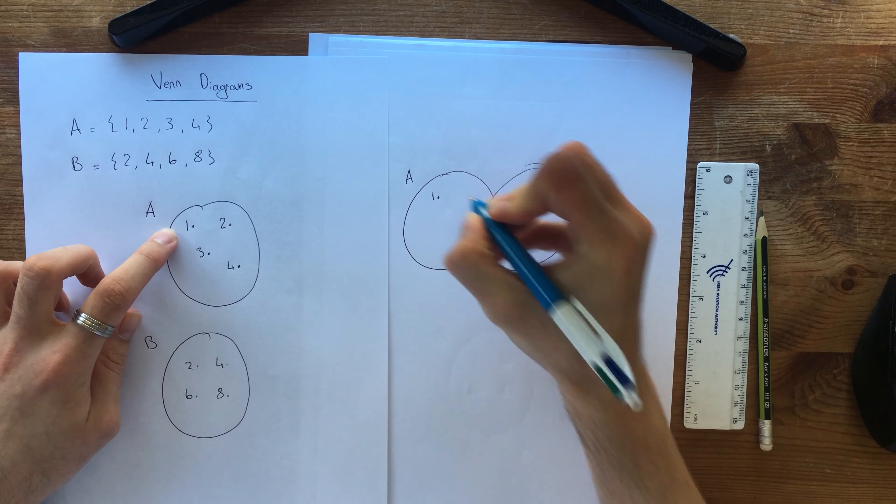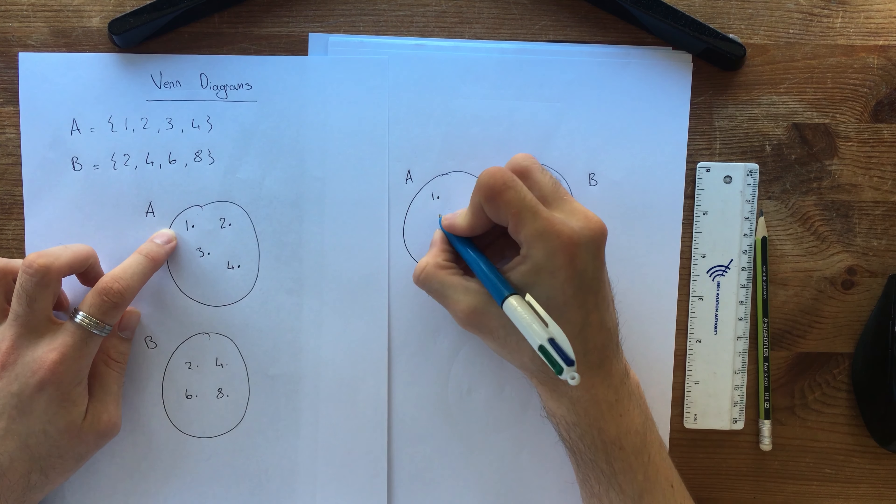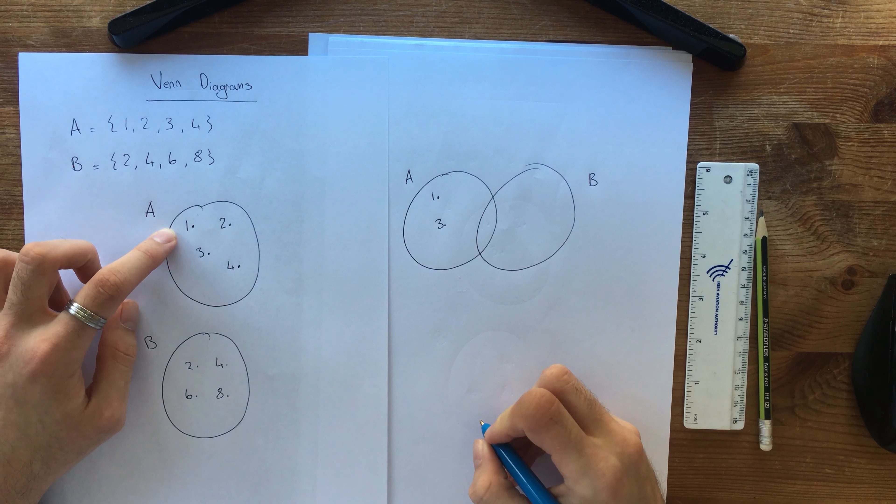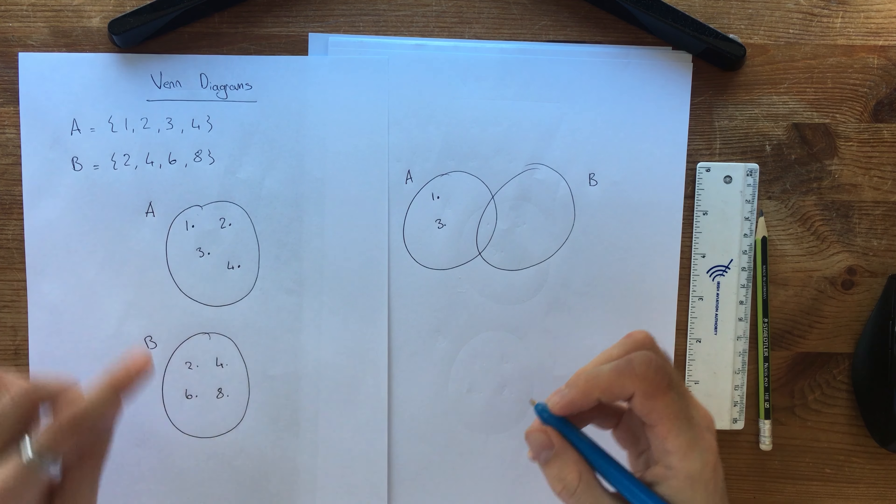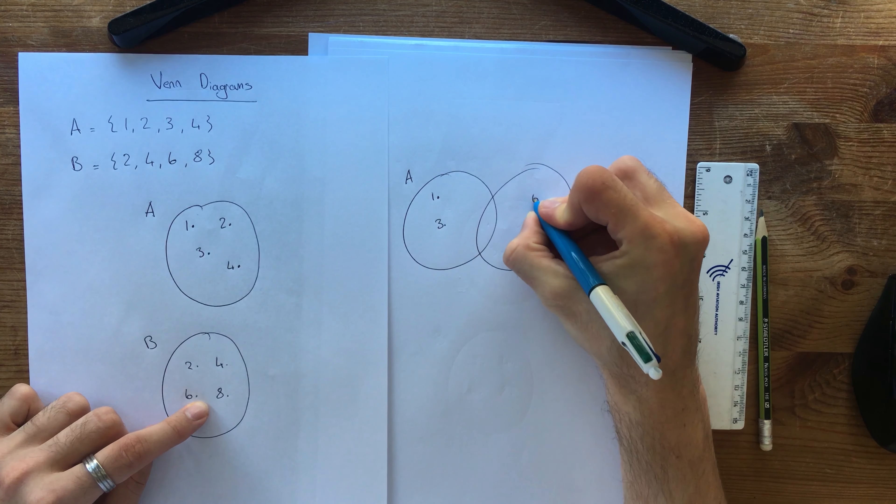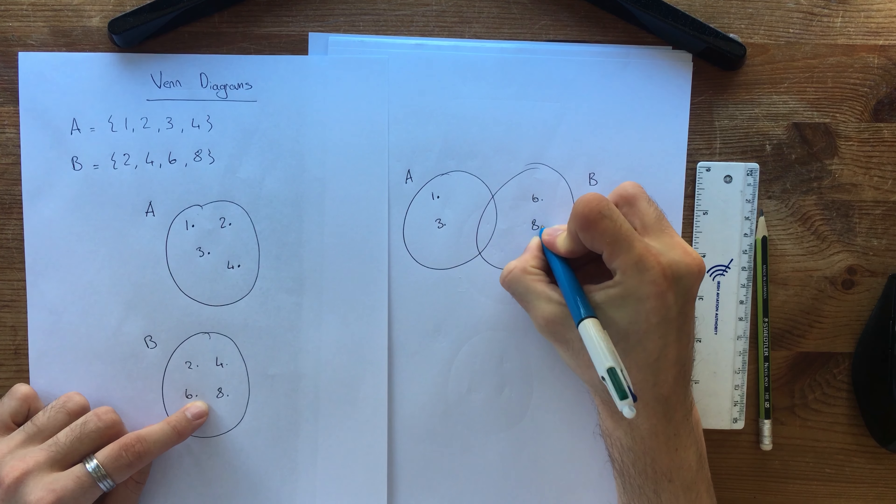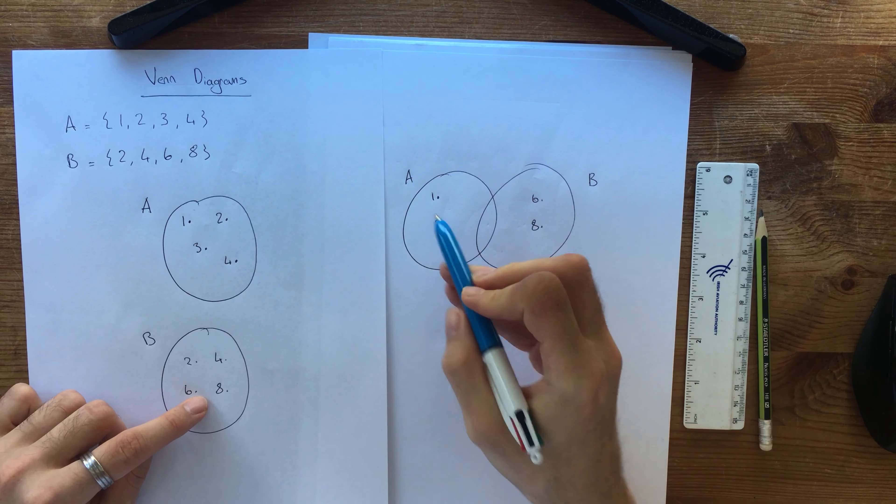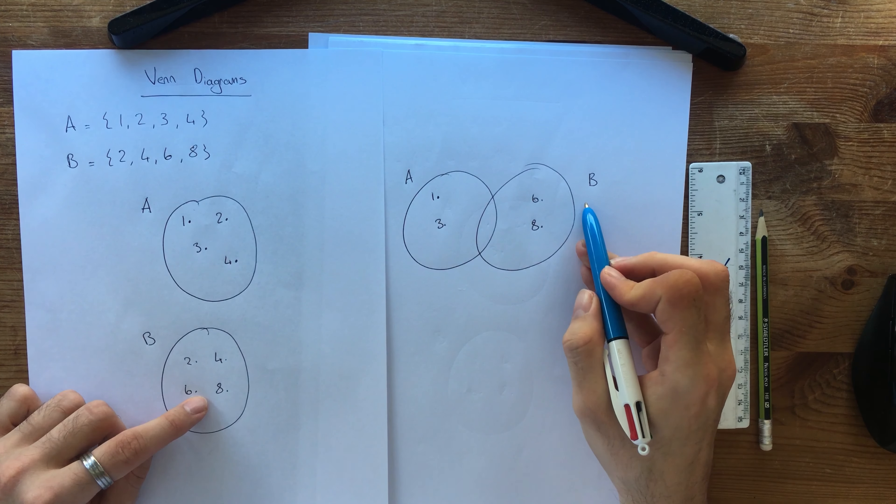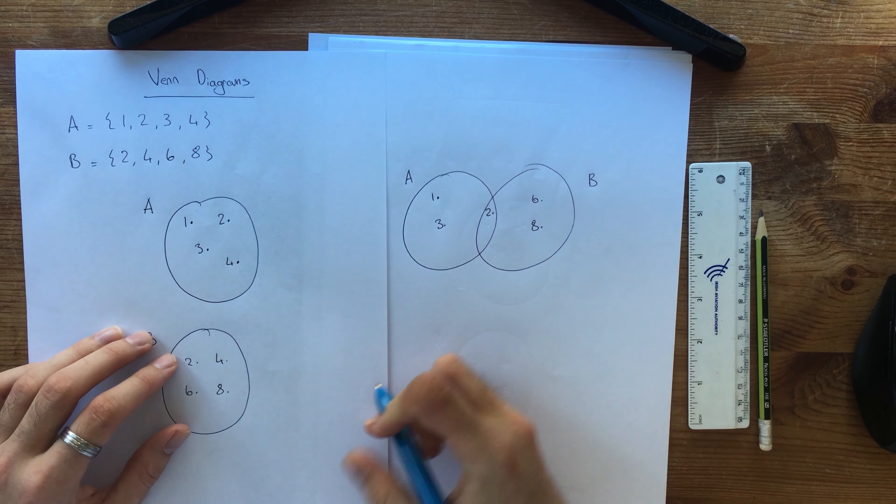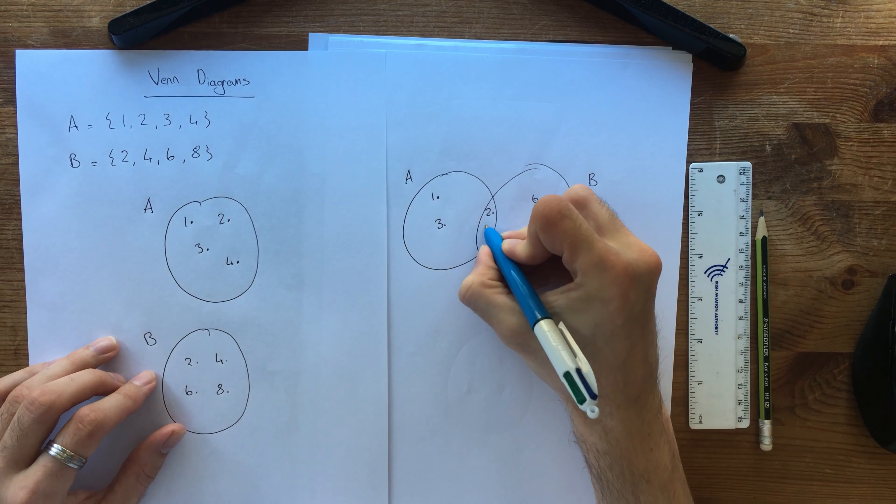So we've got 1 and I'm going to put in 3. And over here we have 2, 4, 6, 8 but I'm only going to put in 6 and 8. This little gap in here is what's in A and also in B. So what's in A and in B? Well 2 is in A and B so 2 can go in here. And 4 is also in A and B so 4 can go in here.